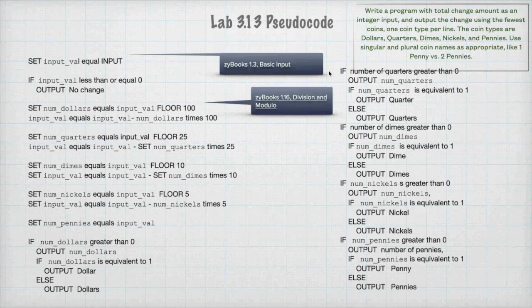3.13 is very much like that numbers one that we did with the floor operator. Somebody is going to put in a value. The first thing you're going to check it for is that it is greater than or equal to zero. So, if it's less than or equal to zero, you're going to output no change and be done with it.